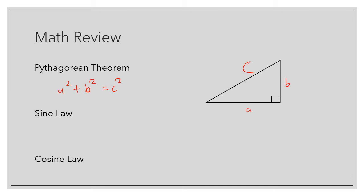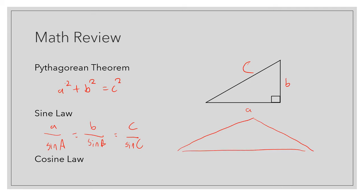For non-right angled triangles, you should also know the sine law and cosine law. Sine law states that a over sine of A is equal to b over sine of B, which is also equal to c over sine of C — where each angle corresponds to the opposite side length. Sine law is used if you have an angle and its corresponding side length, and you're trying to find either another angle or another side length.